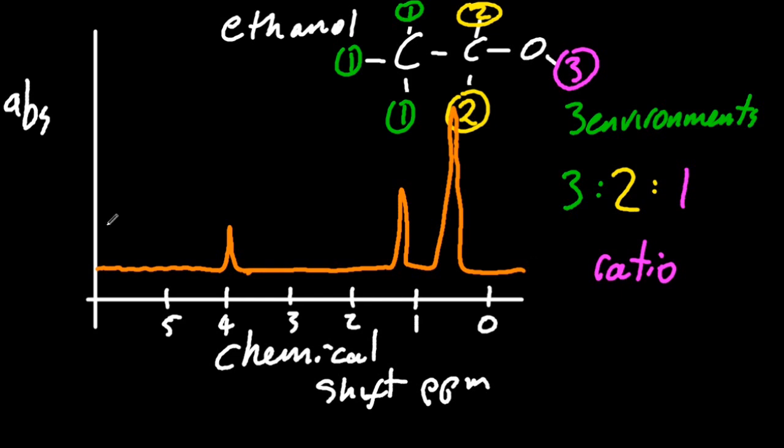What I'm trying to draw on here is an integration trace. And that's another thing you're expected to know. If you look at the heights of the vertical part of those graphs, that will give you the ratio of the areas. So one to two to three. Or sometimes they just write the numbers on top.